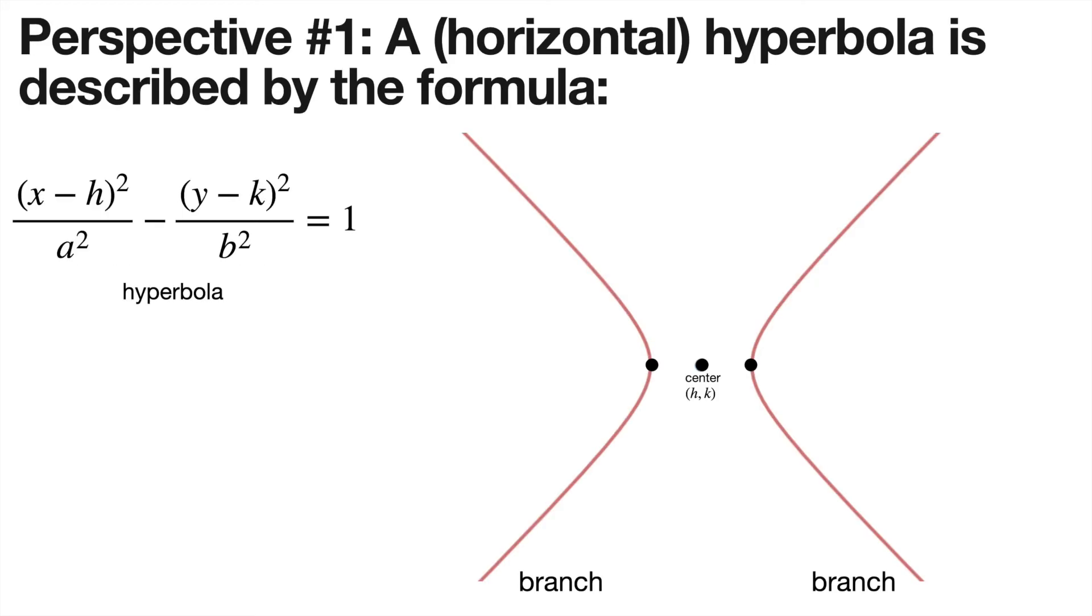We're mainly going to be looking at this equation, which graphs as the picture you see on the right. A hyperbola has two branches, and this particular hyperbola, like an ellipse, has a center at h,k. You probably note that this formula looks a lot like the ellipse formula, except that there's a minus instead of a plus.